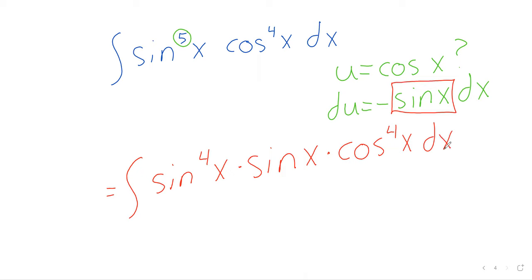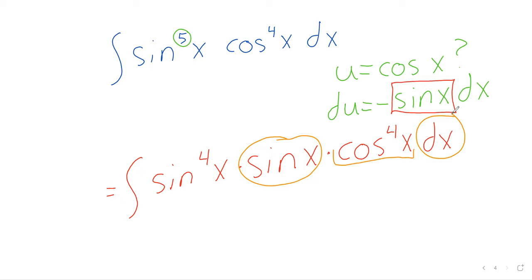If this is the u-substitution we end up doing, the lone sine of x times dx will turn into du. The cosine to the fourth of x will just be u to the fourth — that's no problem at all.